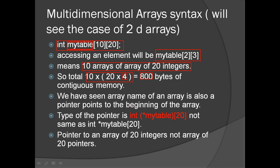The type of my_table is int(*)[20] — that is, int open parenthesis, star, close parenthesis, square bracket 20, closing square bracket. And it is not the same as int* my_table[20]. The parentheses here are mandatory, not optional. So my_table is a pointer to an array of 20 integers, not an array of 20 pointers. int* my_table[20] is an array of 20 pointers; int(*my_table)[20] is a pointer to an array of 20 integers.